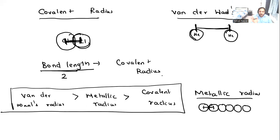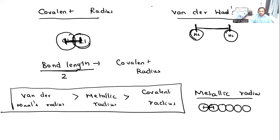We complete the radius section here. Next, we have to learn about ionization enthalpy, electronegativity, and electron affinity, which will be covered in video number 2.